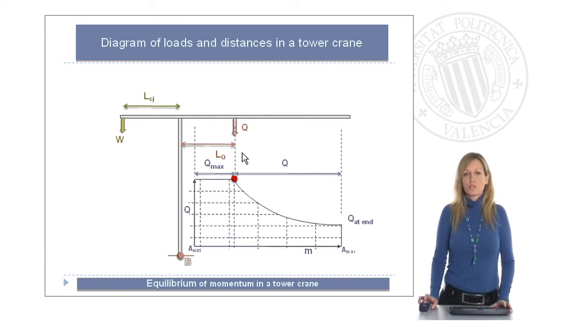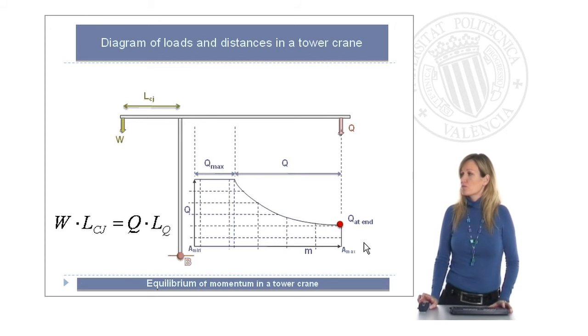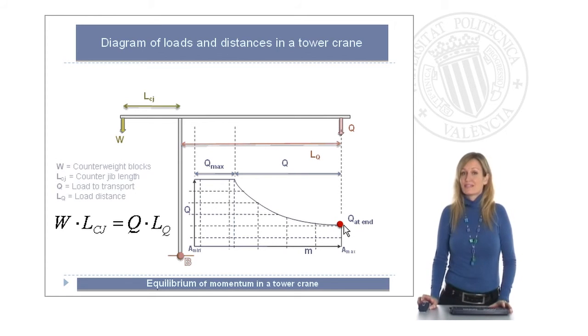Because if we want to continue having the load in a bigger distance than that from the axis, we will have to reduce the value of the load as you can clearly see in this diagram. Arriving to this value, which is called the load at the end, and it's situated at the maximum distance the jib allows us to do.